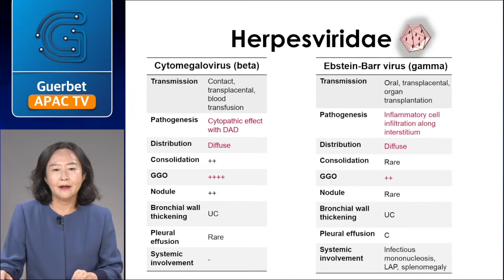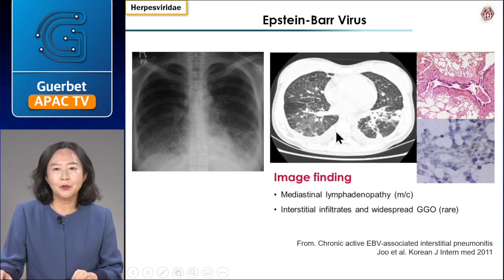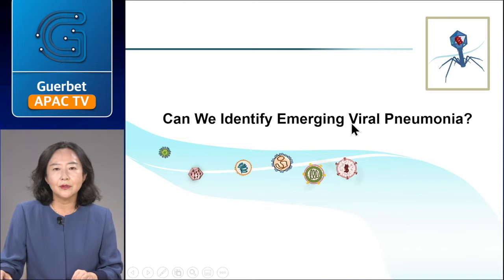Epstein-Barr virus is another Herpesviridae family member. Although rarely experienced, it can be a pathogen of pneumonia with an interstitial pattern. This is a case from an article. EBV pneumonia shows diffuse interstitial infiltrates and ground-glass opacity. So, viruses in the same viral family share a similar pathogenesis of pneumonia, and the imaging patterns have distinguishable characteristics — though not all cases manifest with typical patterns.